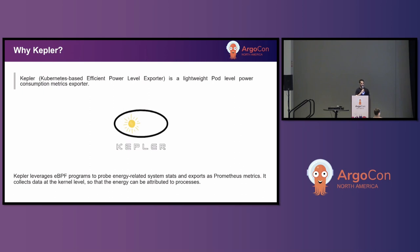Kepler also logs metrics at the pod or container level. It uses eBPF — extended Berkeley Packet Filter — to reduce the runtime overhead, with programs to probe the system stats and export the results, or the energy-related data, as Prometheus metrics.